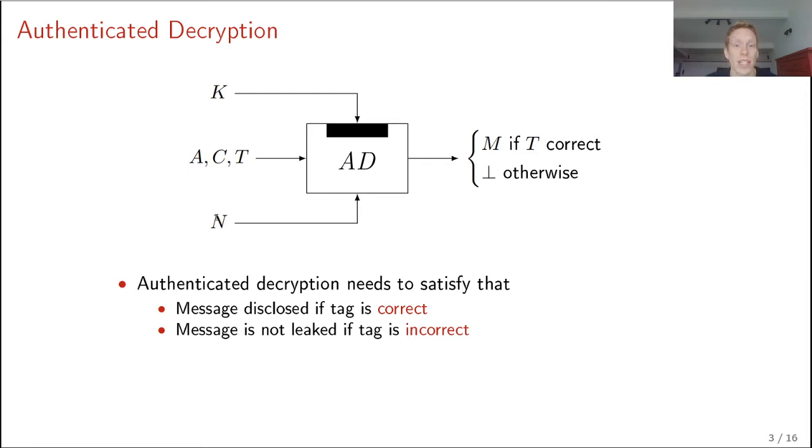And finally, this function needs to be correct, of course, which means that if you encrypt the message using a certain nonce and associated data, and then you decrypt the message again, same nonce and associated data, you should retrieve the original message back.